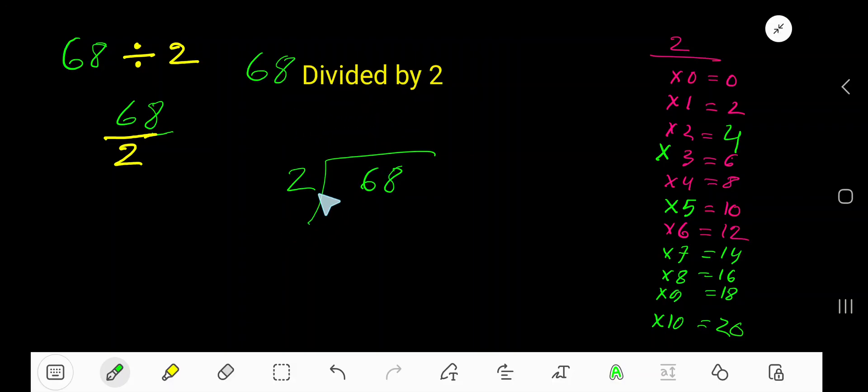68 divided by 2. Okay, 2 goes into 6 how many times? So we need the multiplication table of 2. 2 times 0 is 0, 2 times 1 is 2, 2 times 2 is 4, 2 times 3 is 6.